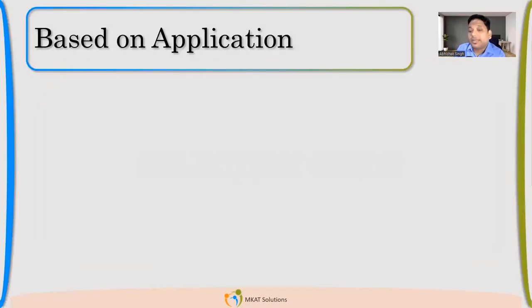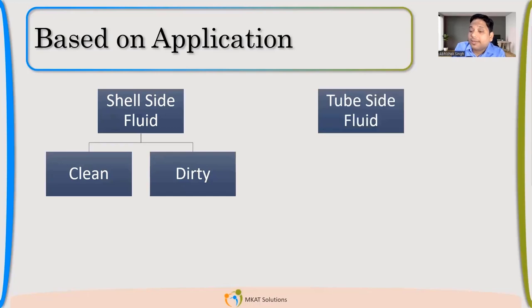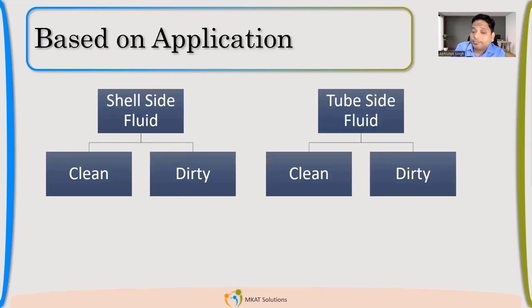So based on application, there can be lots of different, different reasons to have a different type. So if we talk about just on application basis. So just take one example. My shell side fluid. So application basis means what? My shell side or tube side fluid can be clean or dirty. We talked about earlier also. Based on these also, my selection may vary.